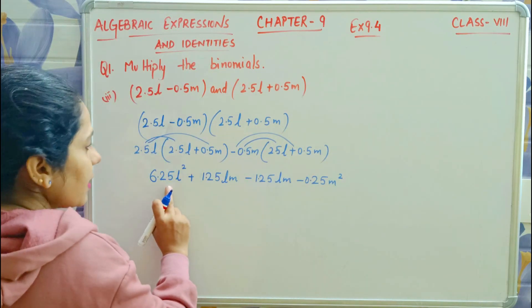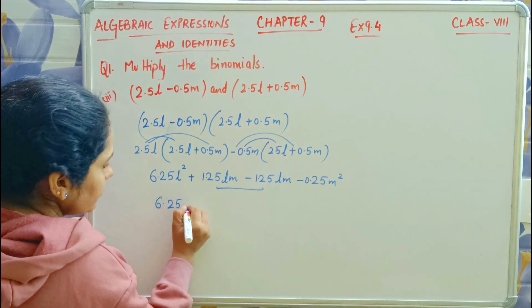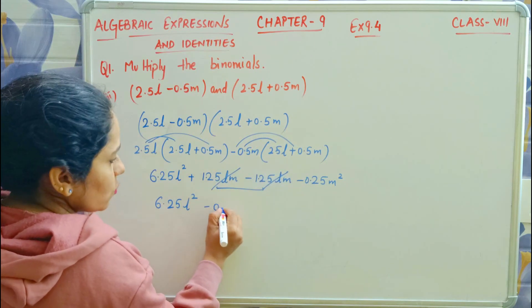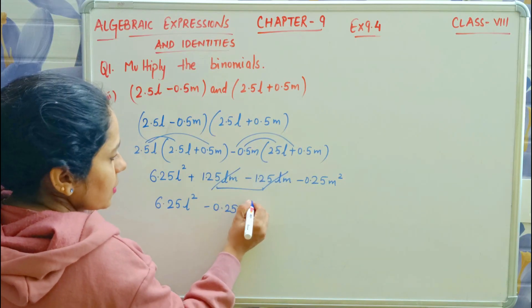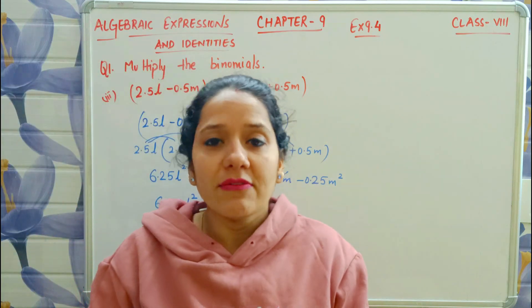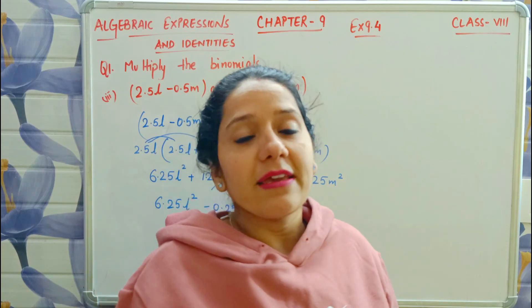Now see, like terms are these two. This is as it is. Plus minus minus, so they're the same and cancel out. What do you have? 6.25L squared minus 0.25M squared. See, when we subtract these two, we get 0, so we just drop it.